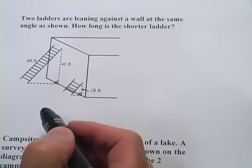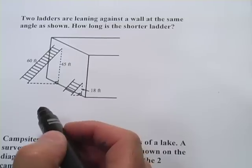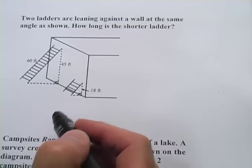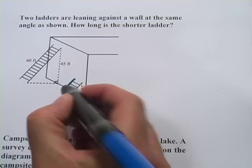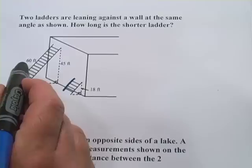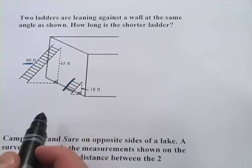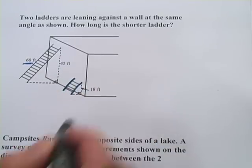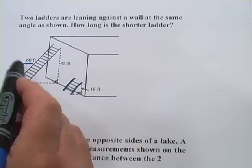The first one says two ladders are leaning against a wall at the same angle as shown. How long is the shorter ladder? So we really want to find that side right there, and it corresponds to this side over here that's 60 feet. It's actually the same as this side here on the triangle. So 60 feet.